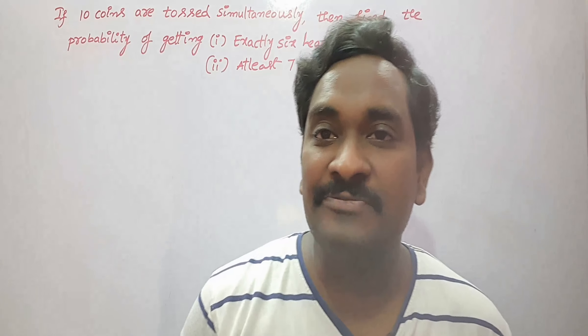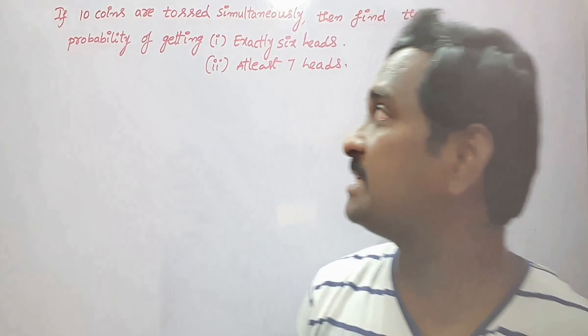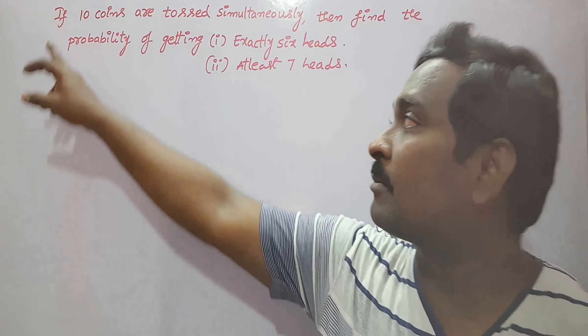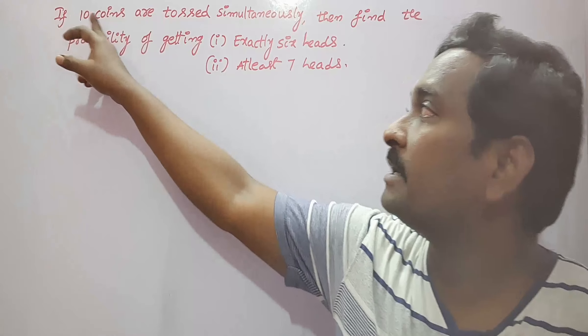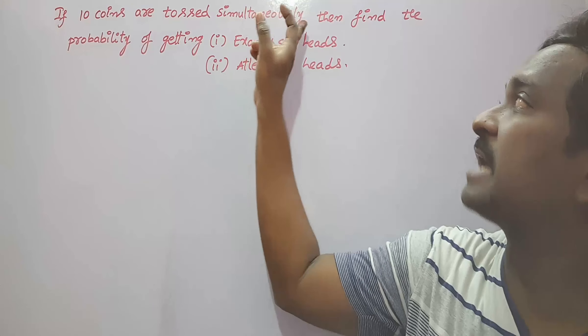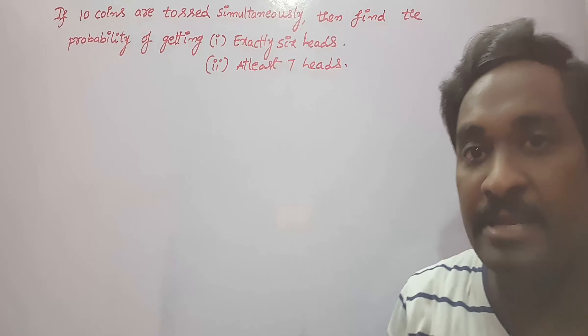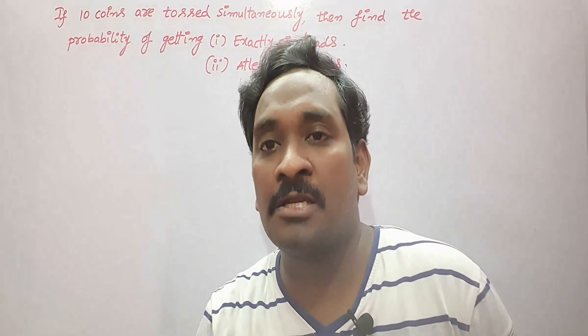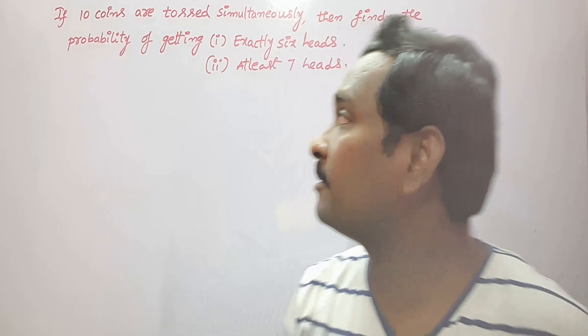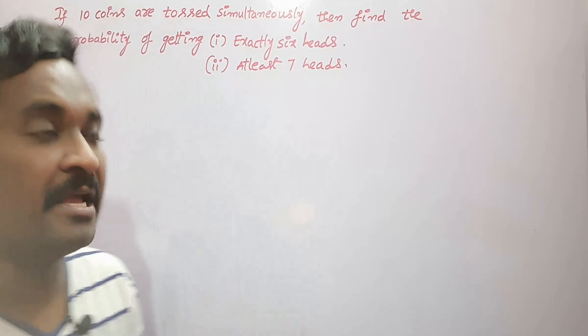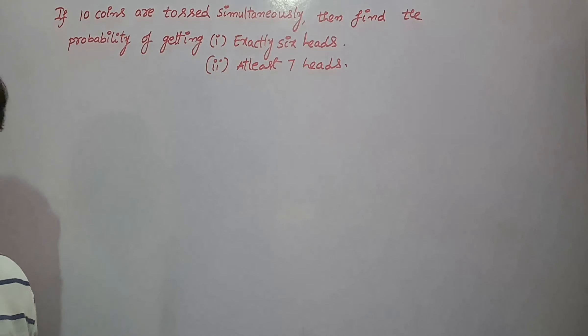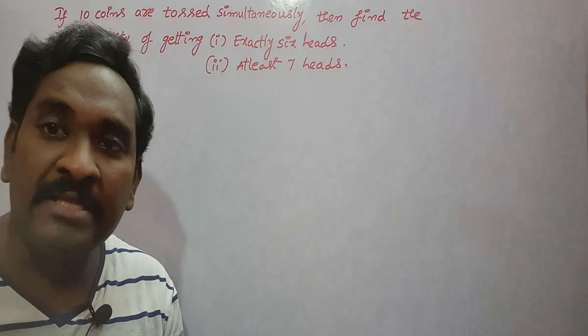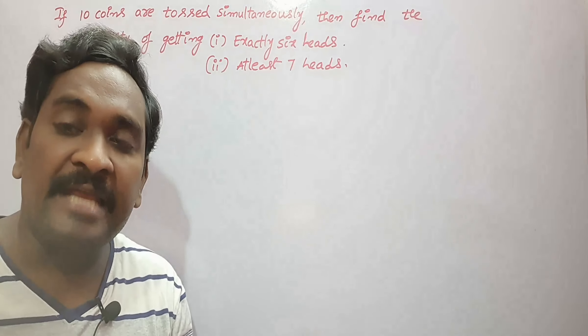Hi everyone, welcome back to our channel. In this video I will give an example on binomial distribution. The statement of the problem: if 10 coins are tossed simultaneously — meaning 10 coins are tossed at a time — find the probability of getting exactly 6 heads.